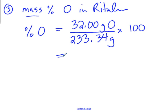32 divided by 233.34 times 100. We want four significant digits, so 13.71 percent oxygen. If you did that for carbon, for hydrogen, for nitrogen, and added it all up, you should get 100 percent. In a few minutes, we're going to take that idea, and we're going to work backwards. We're going to give you the percent composition of a compound, and you're going to see if you can go back and find its formula.